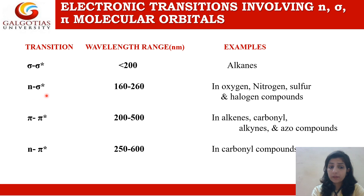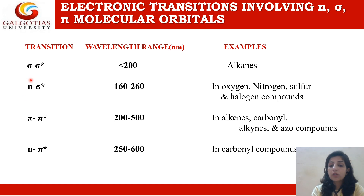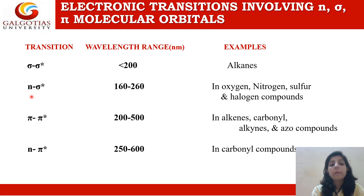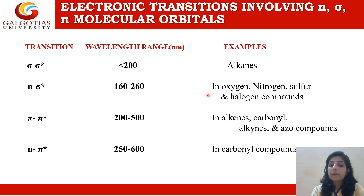Next we have the n to sigma star transition. This transition involves the transition of non-bonding electrons, that is electrons present in your heteroatom, to the sigma star non-bonding orbital. This transition occurs in the wavelength range of 160 to 260 nanometers, and examples include oxygen, nitrogen, sulfur, and halogen compounds.